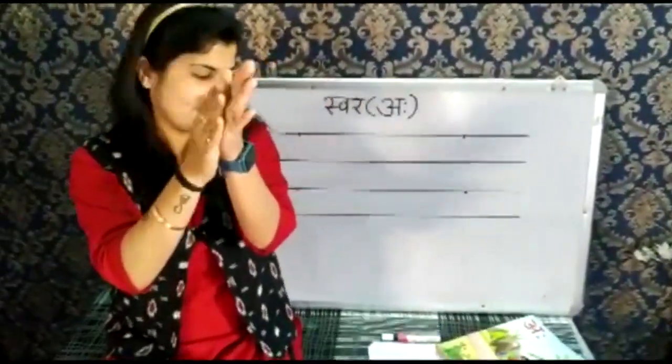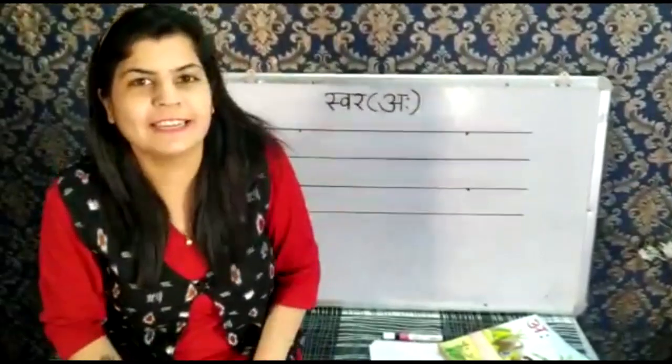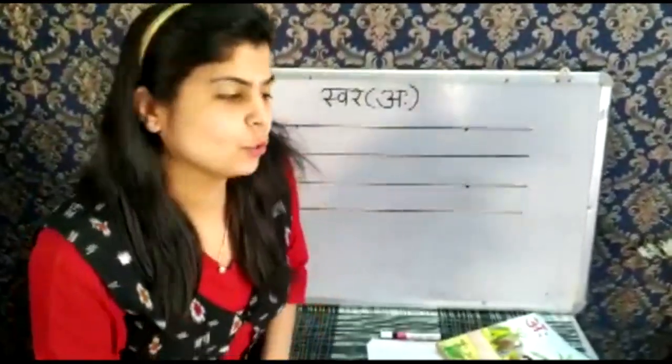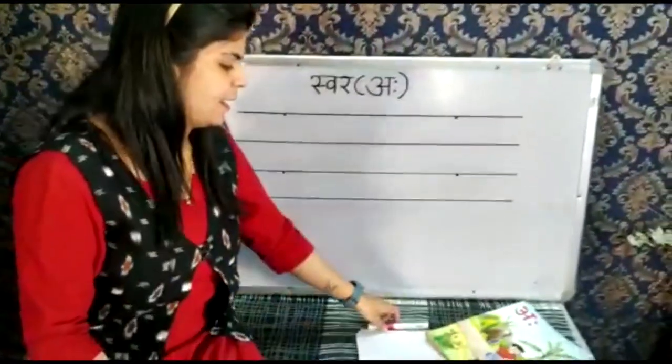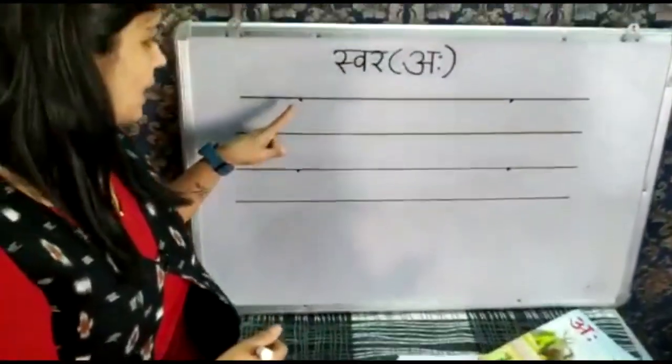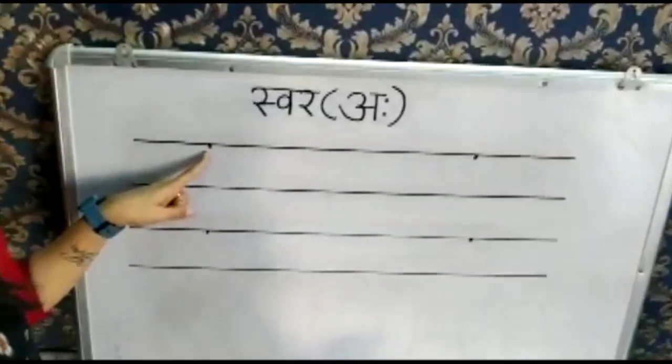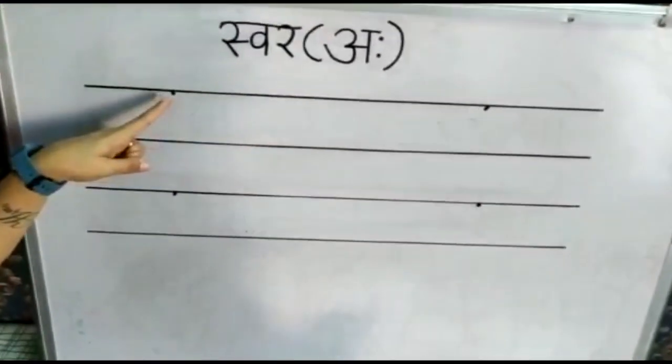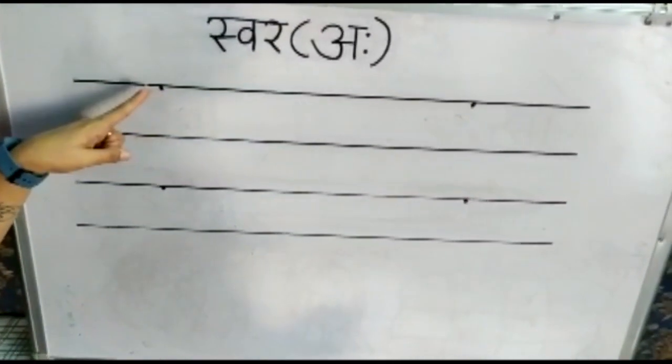Now I will tell you how to write Aha. There is one dot given — you have to start from the given dot.